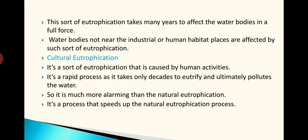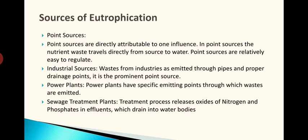Cultural eutrophication is a sort of eutrophication caused by human activities, mainly because of agricultural activities. It is a rapid process and takes only decades to eutrophize and ultimately pollutes the water. It will take only a very short interval of time, making it much more alarming than natural eutrophication. It is a process that speeds up the natural eutrophication process.